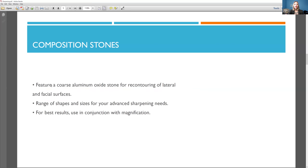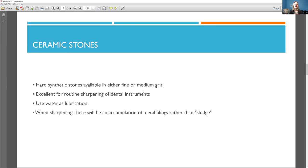So a composition stone features aluminum oxide stone for recontouring of lateral and facial surfaces, a range of shapes and sizes. So sharpening stones come in different colors, types, shapes and sizes. That's all that was pretty much saying.